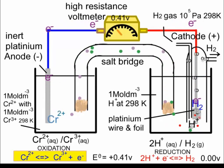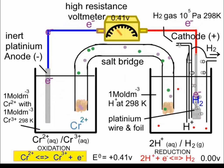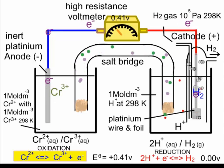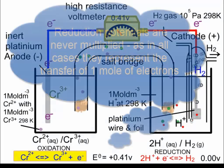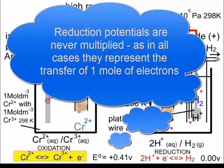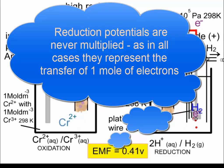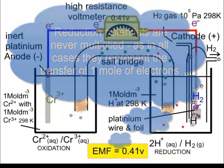On the right we have reduction of hydrogen ions to hydrogen gas, and on the left we have oxidation of chromium 2+ in solution to chromium 3+ in solution. To work out the EMF — the electromotive force or potential difference — we simply add those E-theta values together, giving us a value of plus 0.41 volts.